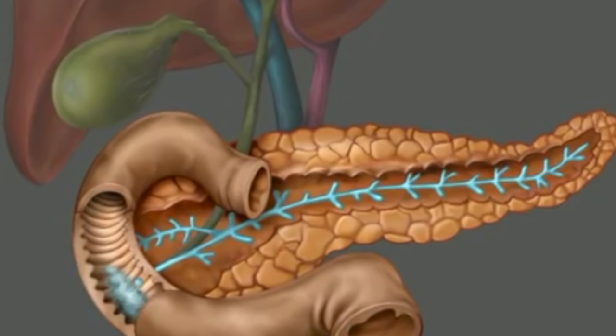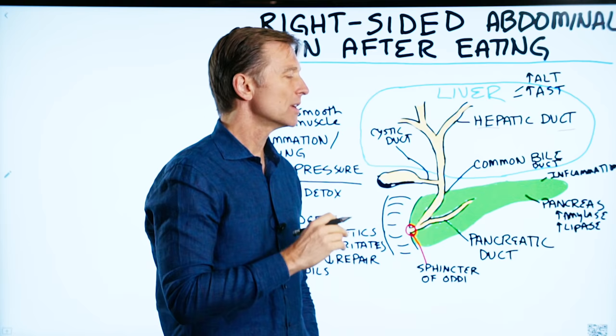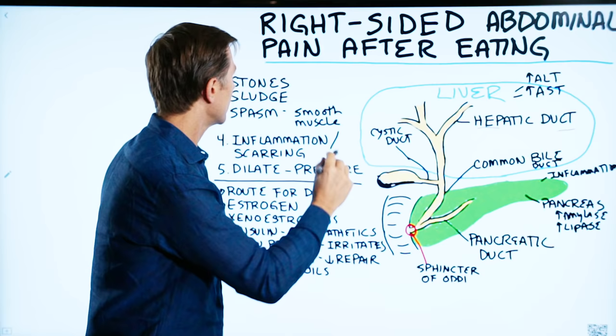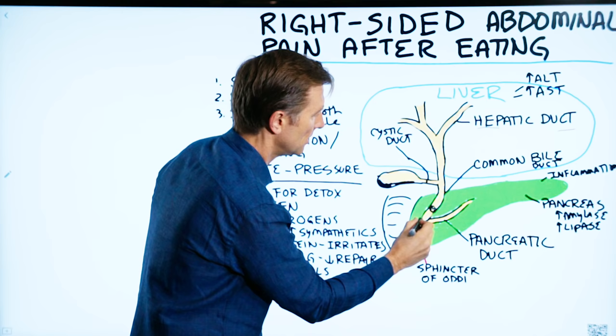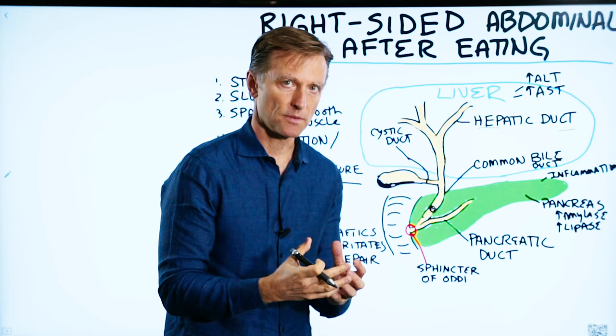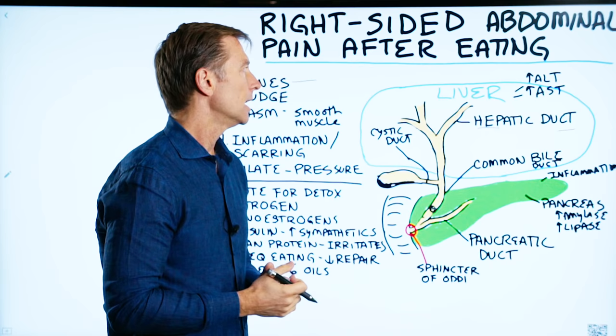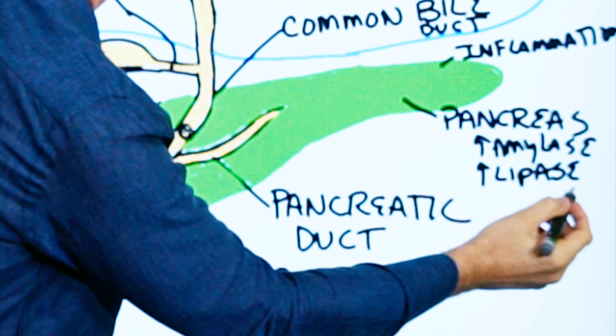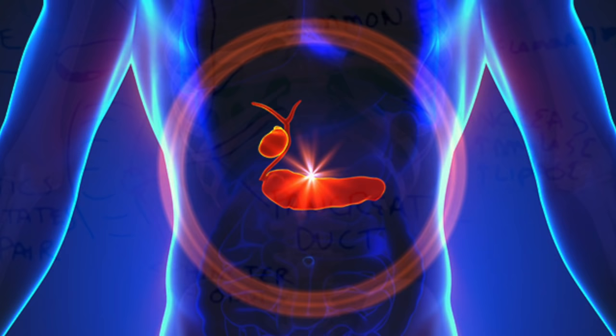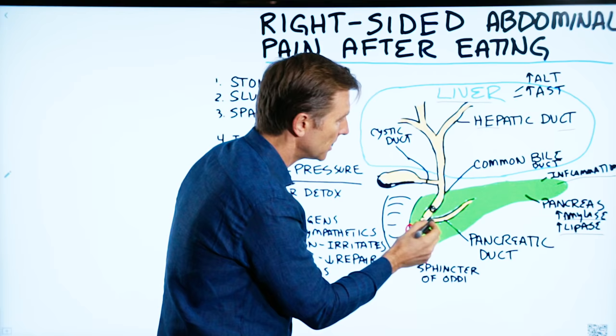Now let's talk about what can go wrong, specifically for abdominal pain and bloating. One of the most common things is stones — in the gallbladder or in the duct. Those stones can drop down into the other ducts, and because those are blocked, it builds up a lot of pressure, causing a lot of pain. If you go to the doctor, they may find elevated liver enzymes, elevated pancreatic enzymes like high levels of lipase or amylase. They may also find pancreatitis — inflammation.